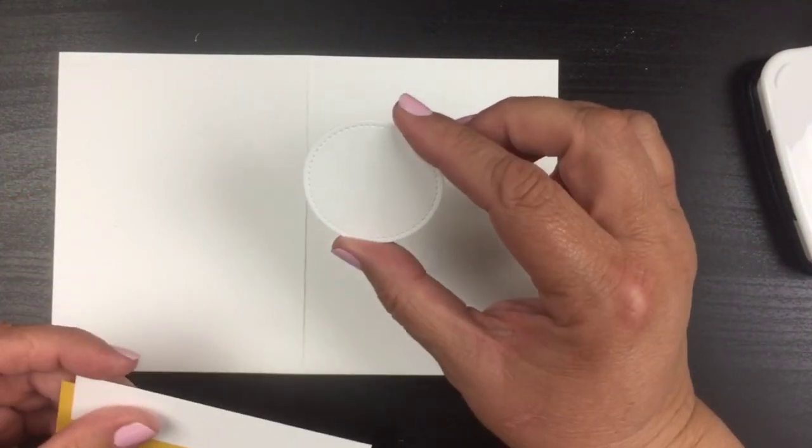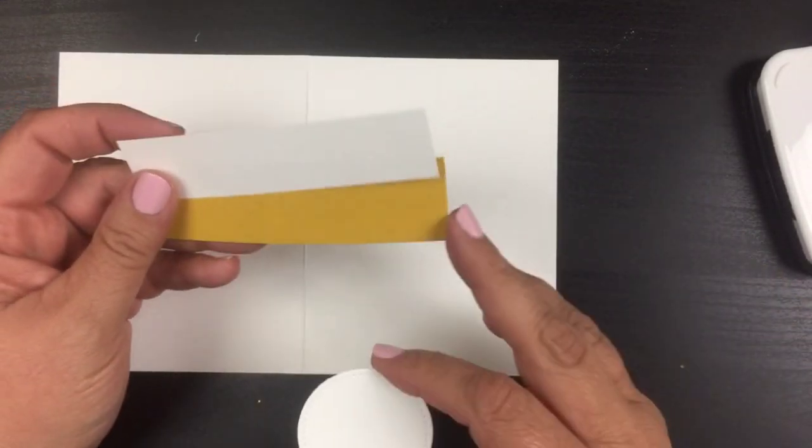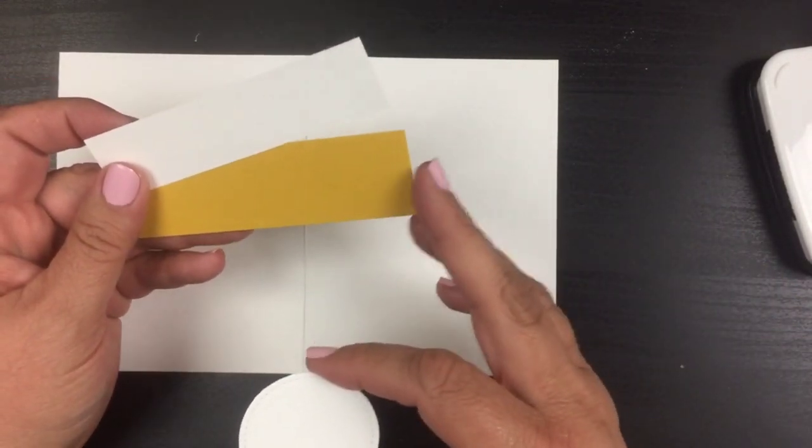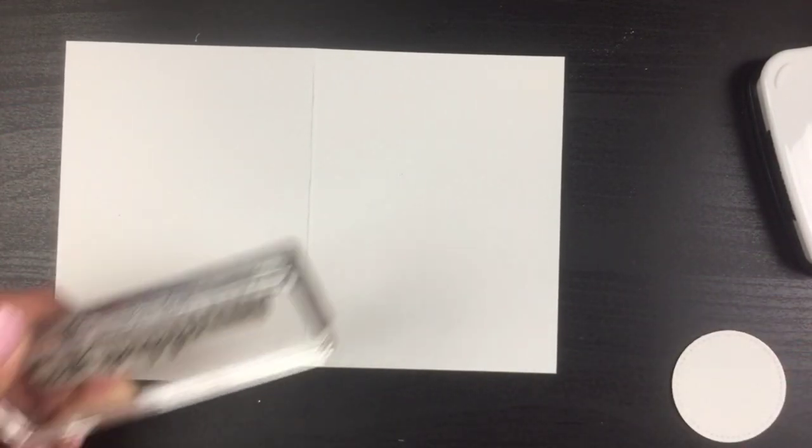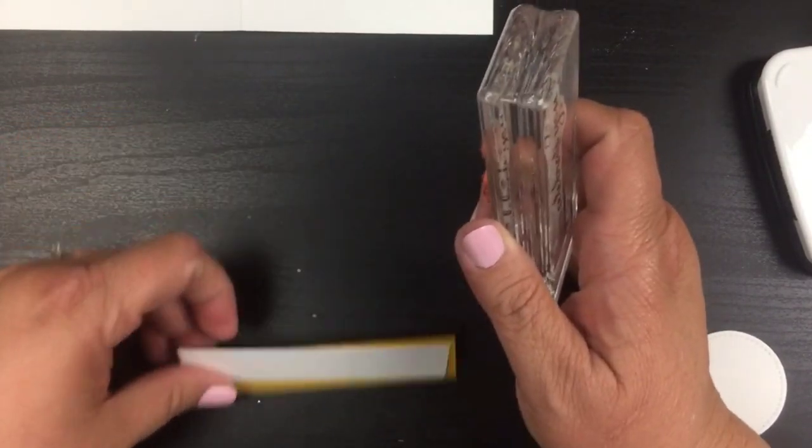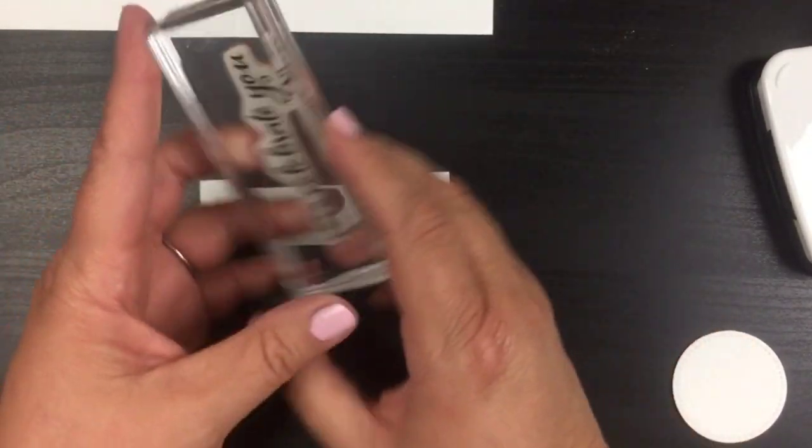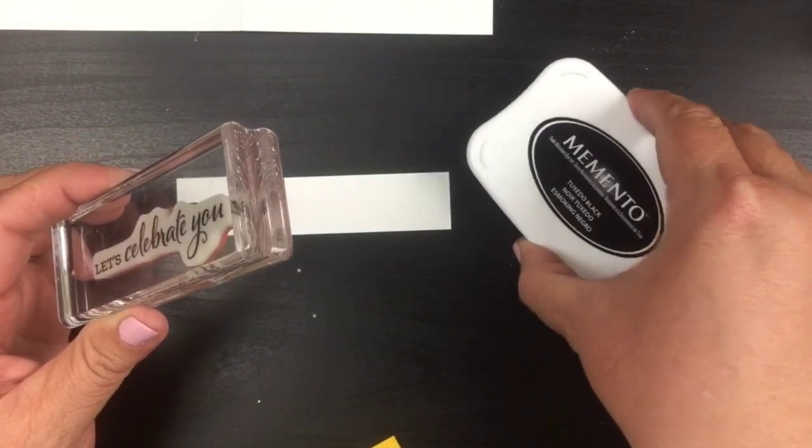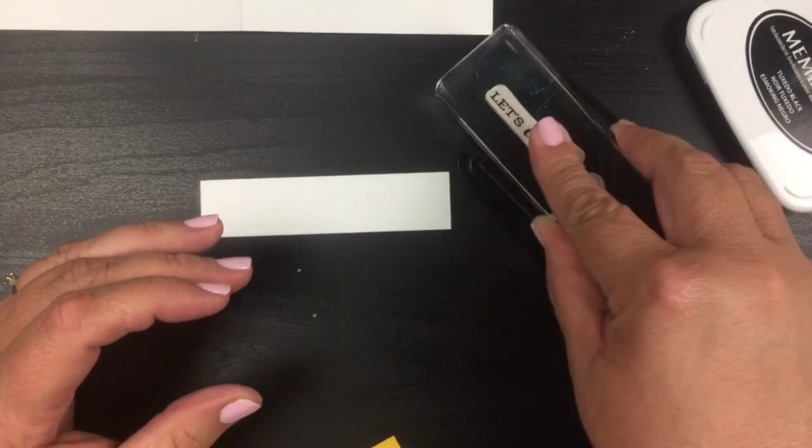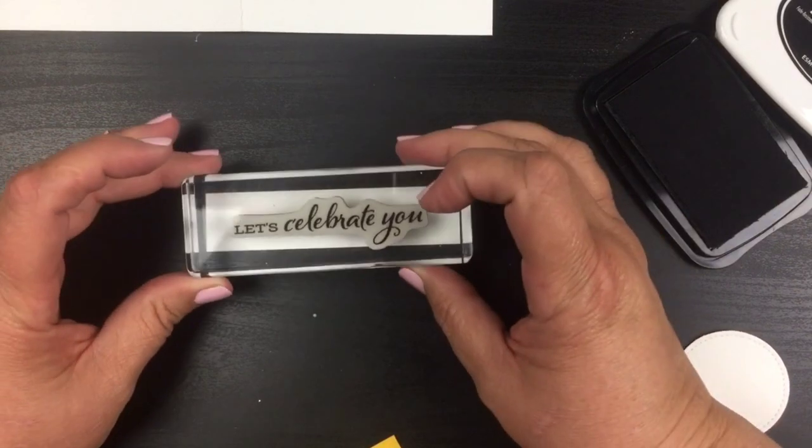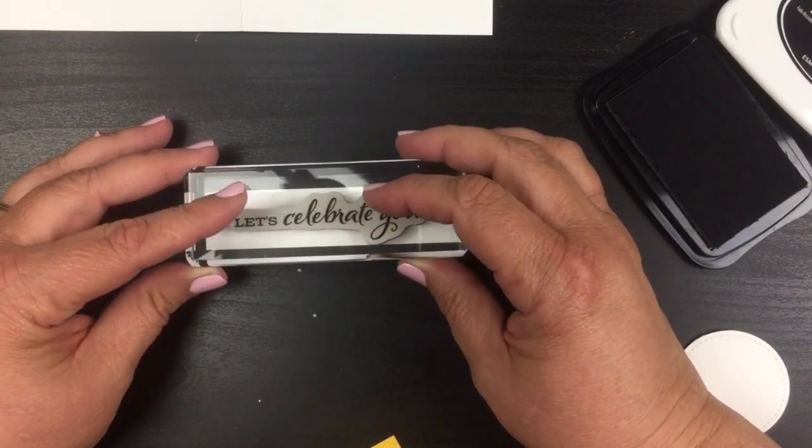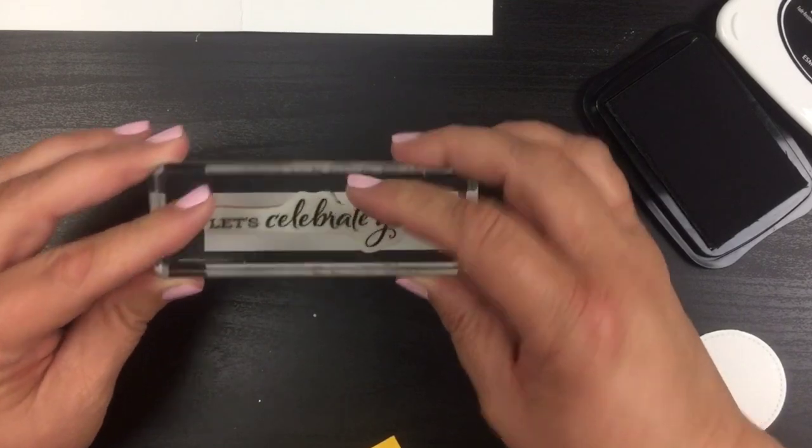I do have a stitched circle and a piece of whisper white and a piece of crushed curry. Let's go ahead and stamp that whisper white with the let's celebrate you. We're gonna go right in the center. There we go.